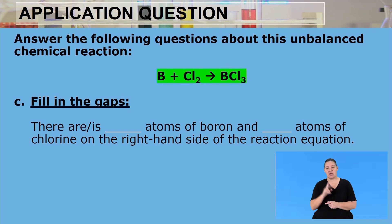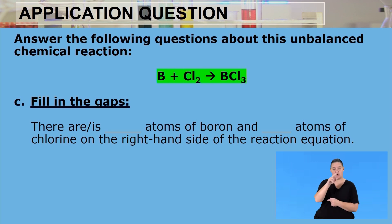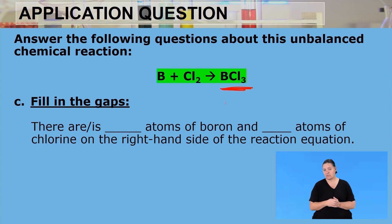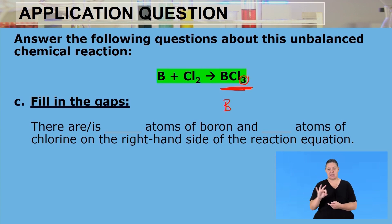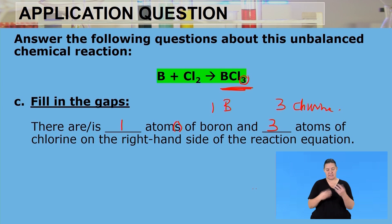Still based on the same unbalanced reaction, we now determine the number of atoms on the right-hand side, which refers to the products. In BCl3, there is one boron atom and the subscript 3 indicates three chlorine atoms. So there is one atom of boron and three atoms of chlorine on the right-hand side of the chemical equation.